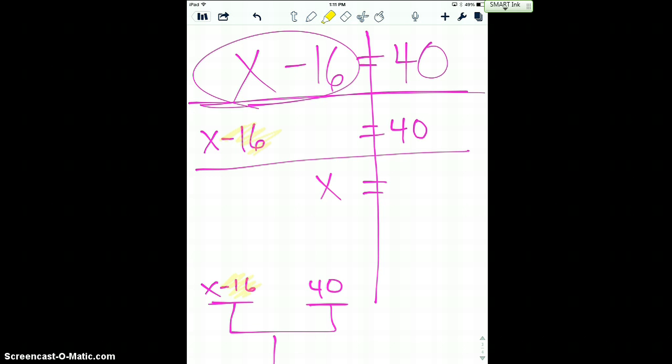Because in the last problem, we could just take them out. In this case, I have negative 16, a minus 16. So I'm gonna have to do the inverse operation of subtraction, which is addition. So if I add 16, the opposite of negative 16, I'll get zero. So if I do that to one side of the scale, I have to do it to the other.